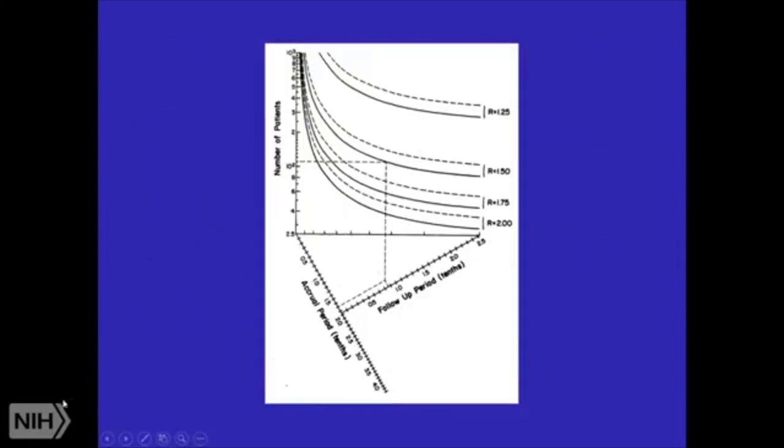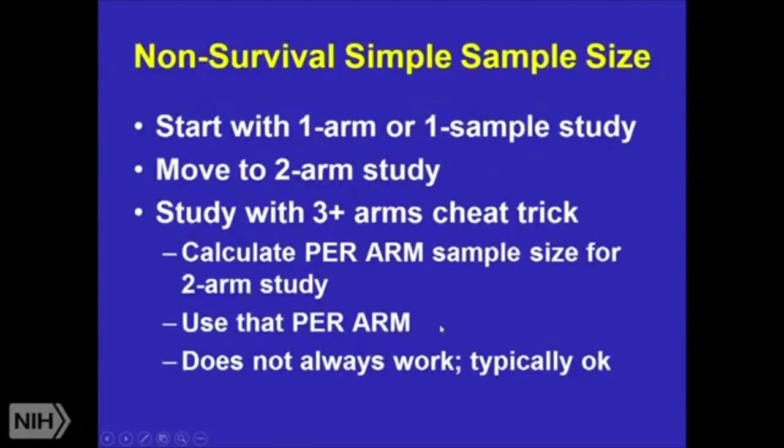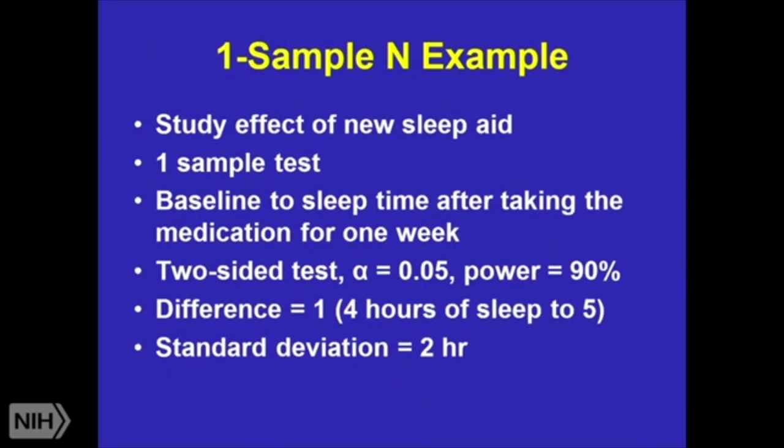I show this picture because you're not always, sometimes you're up here, you're not always down here. So let's think of non-survival simple sample size. Let's start off with one arm or one sample study. Then we're going to move into a two arm sample or two arm study. Cheat trick. If you have three plus arms, calculate the per arm sample size for a two arm study. Use that per arm. It doesn't always work, but it's typically a reasonable estimate of how many people you need per study arm.